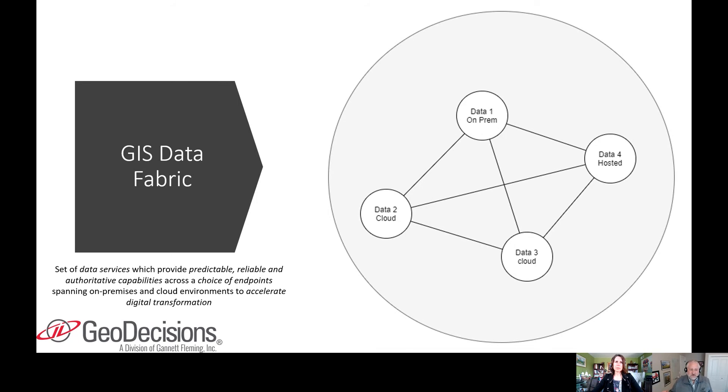It's with on-premise and cloud environments. What that means is a data fabric will have multiple places. You may have on-premise servers that serve some type of data, but at the same time you may be leveraging cloud-based services or servers that are hosted somewhere else off-site from your organization.